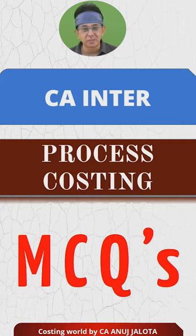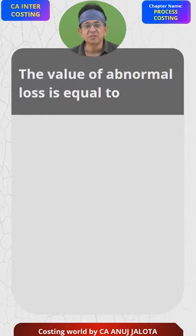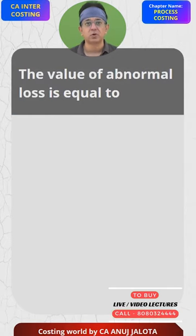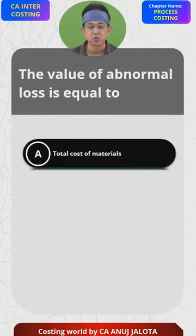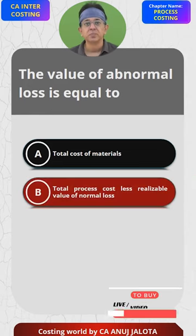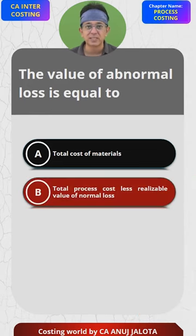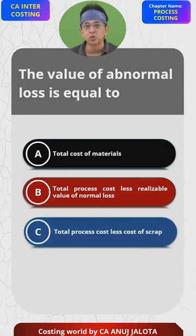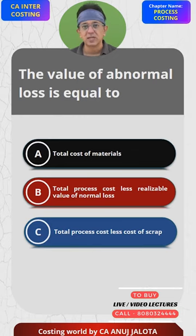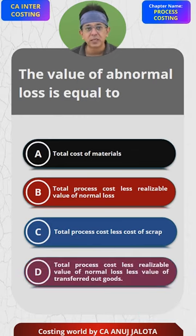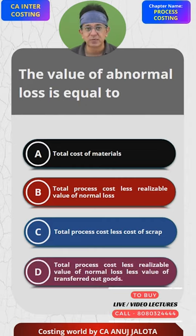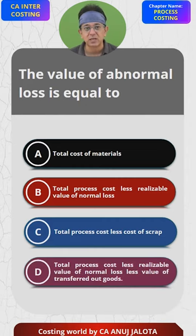Process costing MCQ: The value of abnormal loss — note, not normal loss — is equal to: A) total cost of material, B) total process cost less realizable value of normal loss, C) total process cost less cost of scrap, or D) total process cost less realizable value of normal loss less value of transferred out goods.